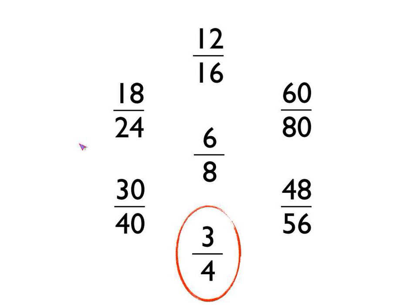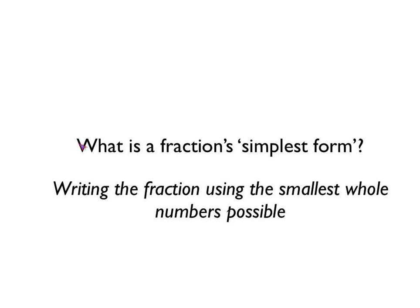Writing a fraction in its simplest form means that you have to write the fraction using the smallest numbers possible. So writing that fraction, the smallest numbers possible that we could write it in would be 3 quarters. Remember that you have to use whole numbers — you can't have decimal numbers in fractions. So to write a fraction in its simplest form, you write it using the smallest whole numbers possible.